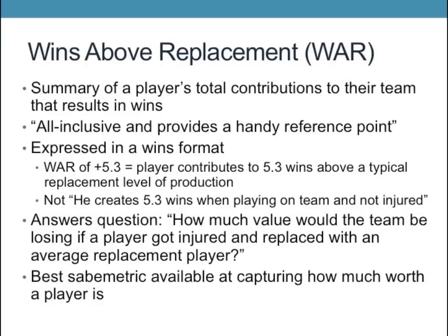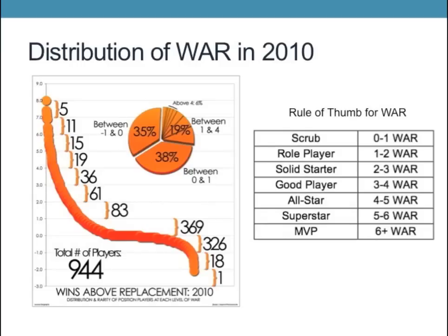WAR basically answers the question: how much value would a team be losing if a player got injured and replaced with an average replacement player? A player with a WAR of plus 5.3 contributes to 5.3 wins above a typical replacement player in level of production. Most analysts say WAR is the best sabermetric available for capturing how much a player is worth. The graph on the left breaks down the WAR distribution of 944 major league players in 2010. Only 5 players had a WAR above 7.0, which is very impressive. About 38% of the league had a WAR between 0 and 1. The chart on the right shows the rule of thumb: a 6-plus WAR is considered MVP-like, whereas a scrub has a WAR under 1. It is also possible to have a negative WAR.